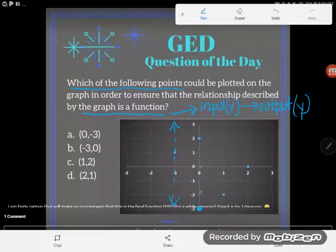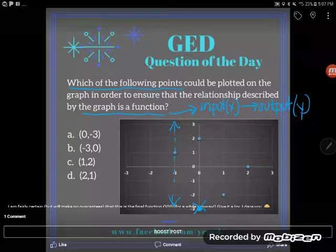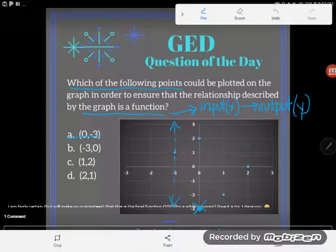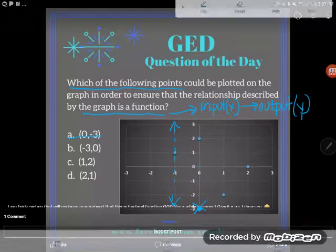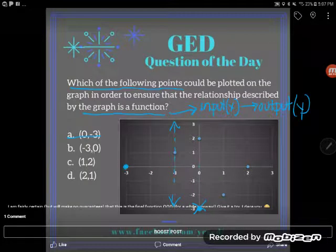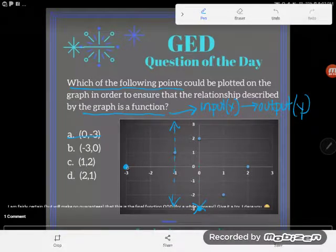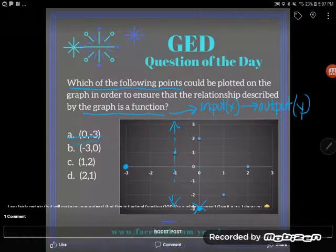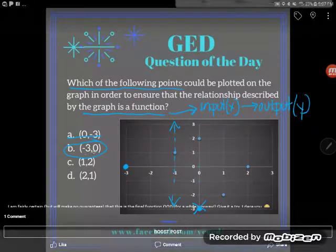They lay on the same vertical line so they have the same X value. I can't graph that point. Now let's take a look at the point (-3, 0). I'm going negative three in the X direction, negative one, two, three, and zero Y, zero up and down. And I can see indeed that there's no other points on this. This must be my answer.